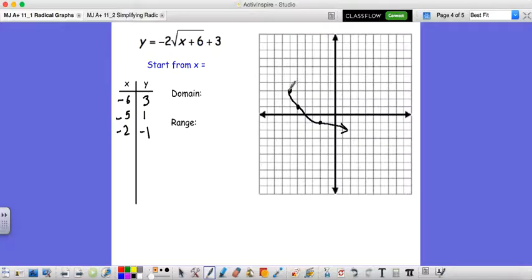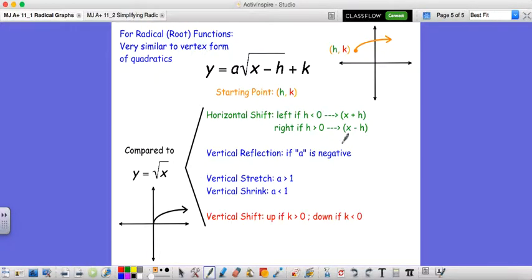Our domain, our x values are only greater than negative 6. So x is greater than or equal to negative 6. Our range, y is only less than 3. So y is less than or equal to 3. We're below 3.